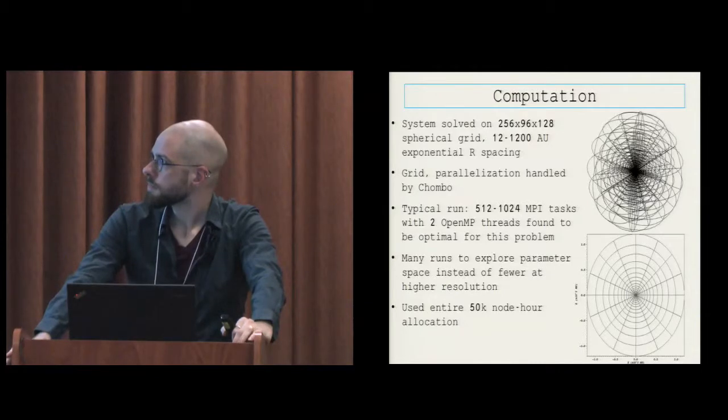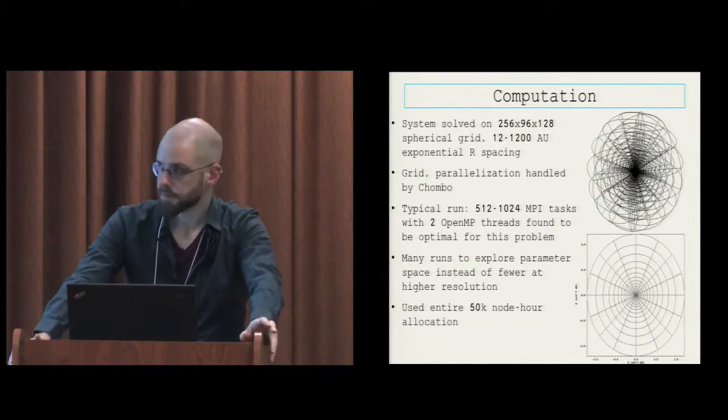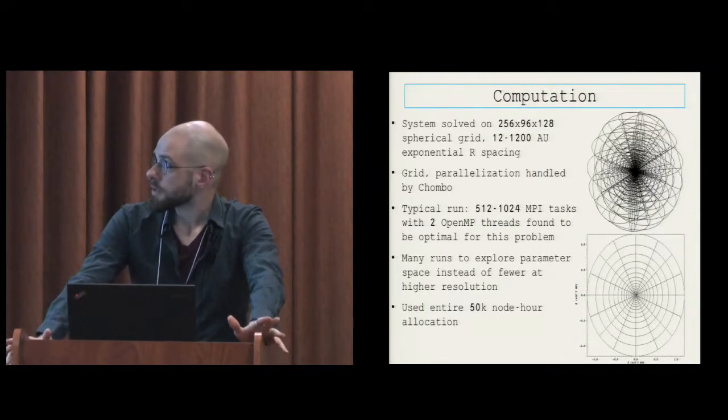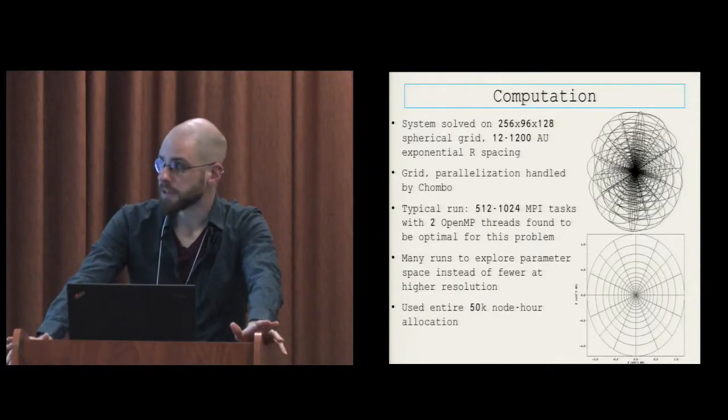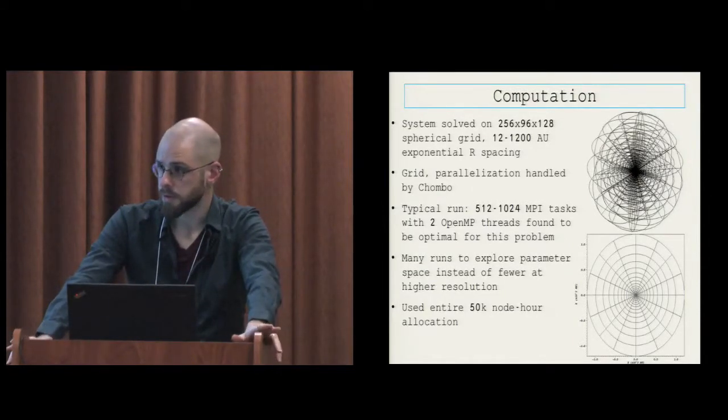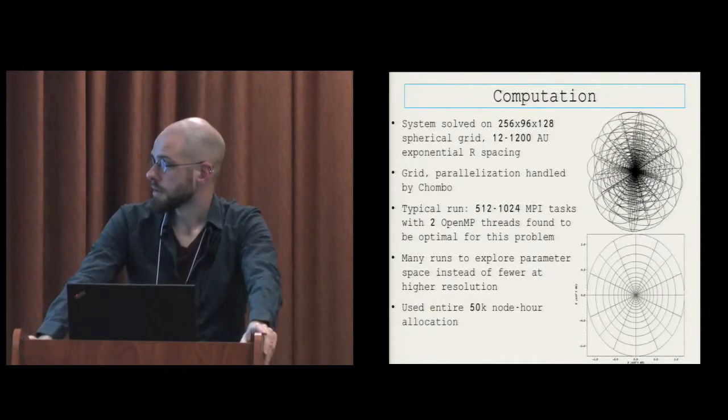A typical run at this resolution is 512 to 1024 MPI tasks, so 32 to 64 nodes with two OpenMP threads. Found that to be optimal for the problem. Using more MPI tasks for that resolution does not help. More MPI tasks would be helpful at higher resolution, but had to make a trade-off here with 50,000 node hours. We don't get the millions of hours you PRAC people get.